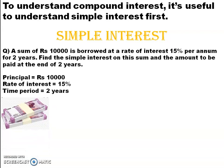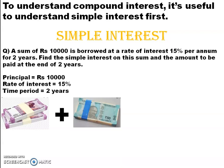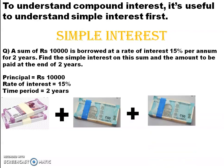If the person is taking 10,000, for the first year he has to pay an extra amount. What is this extra amount? It is 15% of this amount — that is for the first year. What will happen in the second year? You are adding the same amount again. Whatever you added in the first year, the same amount you are going to add in the second year also. That is what we call simple interest.